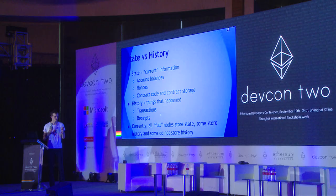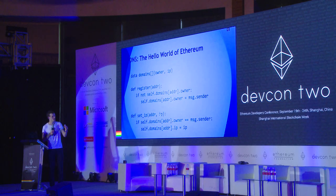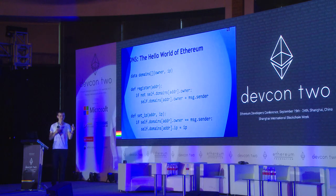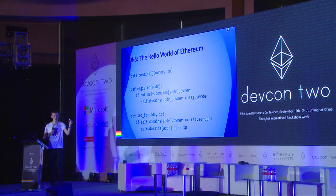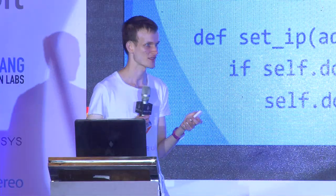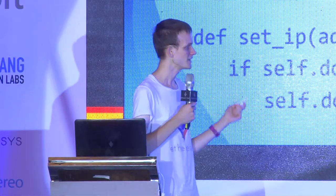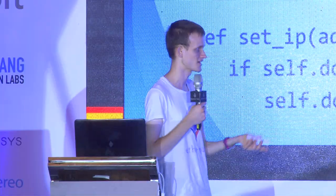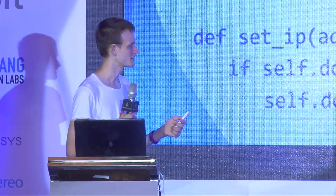If I send a transaction that creates a contract, the contract's code is now in the state. If I send another transaction that talks to this contract and registers a domain, executing that transaction changes the state. The new state will contain storage keys saying this particular domain has some particular owner and IP address. That's what the state means — stuff you have to care about now.